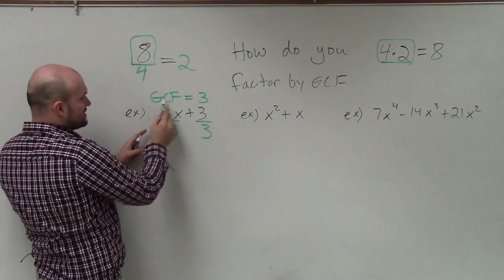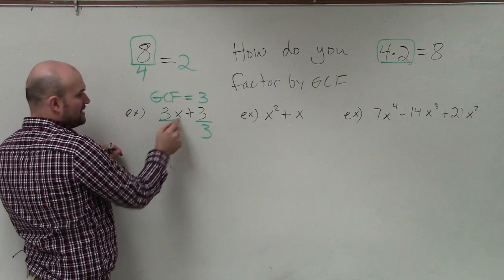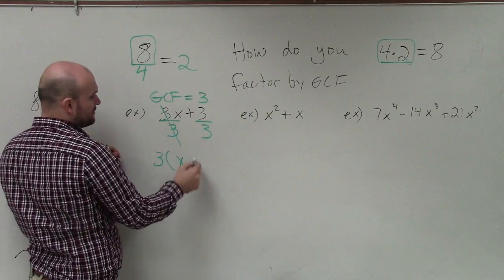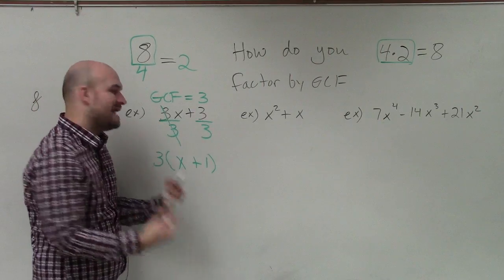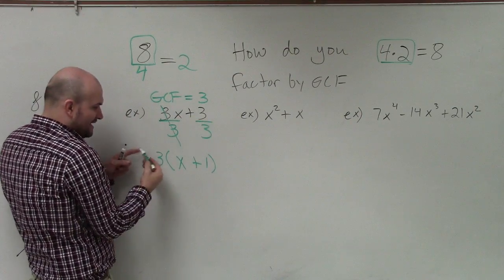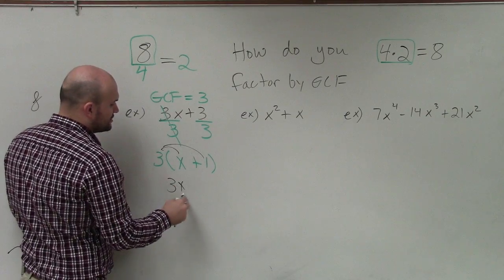Well, the quotient of this divided by 3 is not just going to be a single number like it was 2. It's going to be an expression. 3x divided by 3, those go to 1. It's just going to be x. 3 divided by 3 is positive 1. Now I have factored out the GCF. See, the GCF is 3. I have divided it out. And we can always check our answer by applying the distributed property.